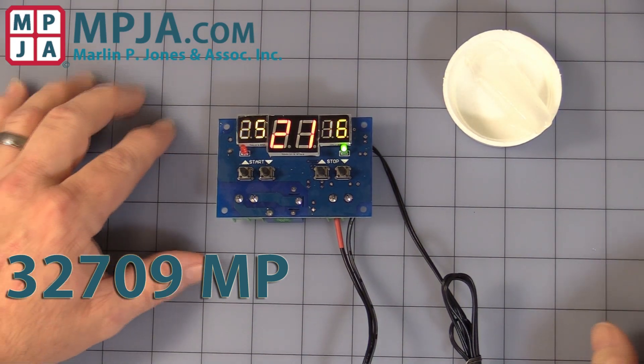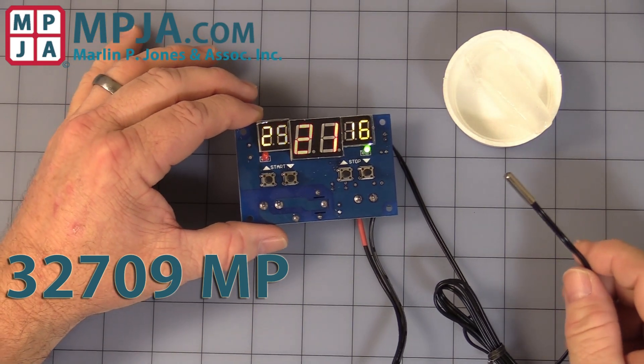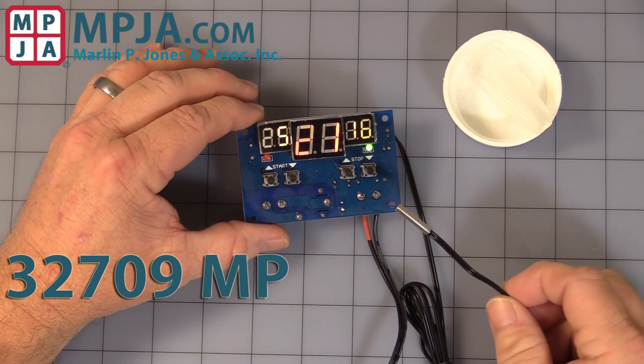Hello. Today's video is on the digital thermostat 32709MP. It's probably one of the easiest ones we have to use because it displays all your settings at once.